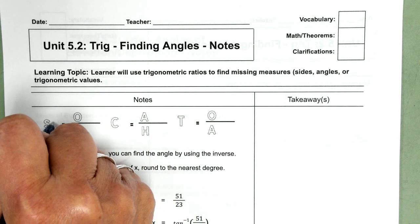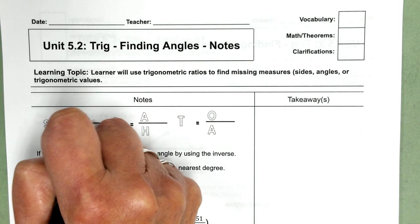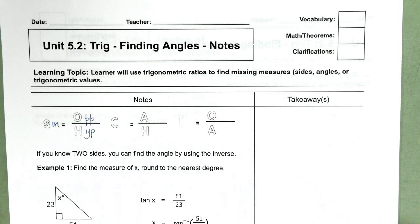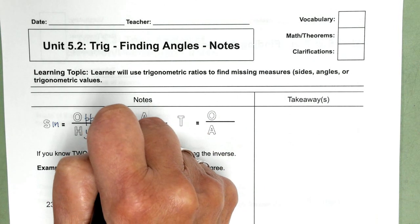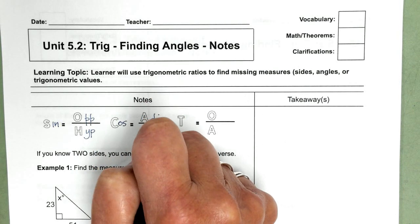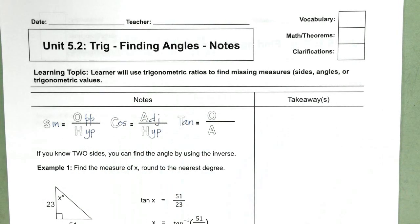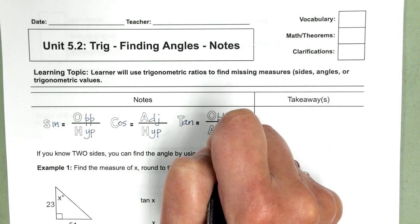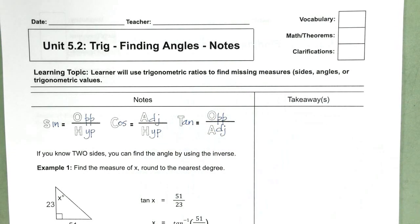So as a review, sine is the ratio of opposite over hypotenuse. Cosine is the ratio of adjacent over hypotenuse, and tangent is the ratio of opposite over adjacent.